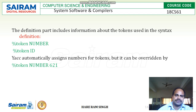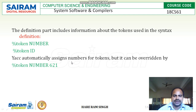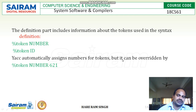In the definition section, all information about tokens and syntax is defined. For example, we can write percentage token NUMBER, meaning NUMBER will be considered as a token, and percentage token ID, meaning ID is a token. YACC automatically assigns numbers to tokens, but this can be overwritten — for example, percentage token NUMBER 621 assigns the value 621 to that token.